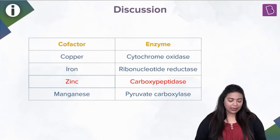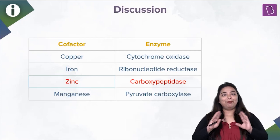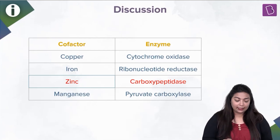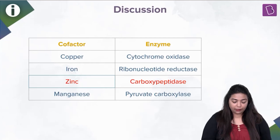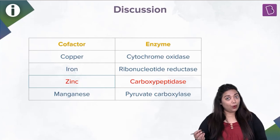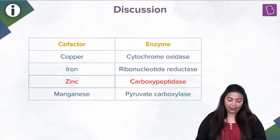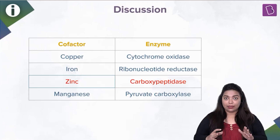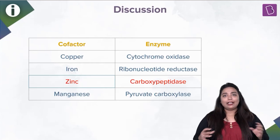Take a look at this table of co-factors: copper is found in cytochrome oxidase, iron in ribonucleotide reductase, zinc in carboxypeptidase, and manganese in pyruvate carboxylase. These are the enzymes which have these particular co-factors attached to them.